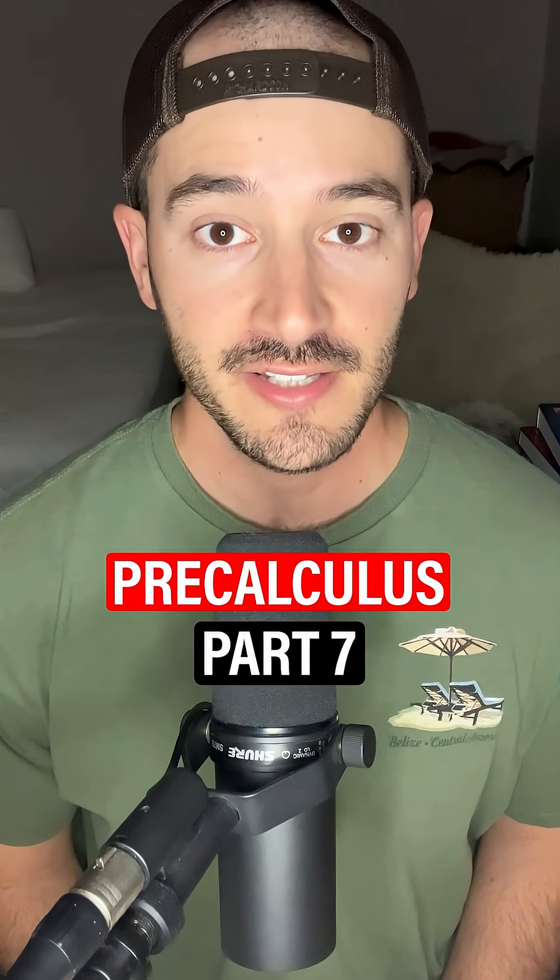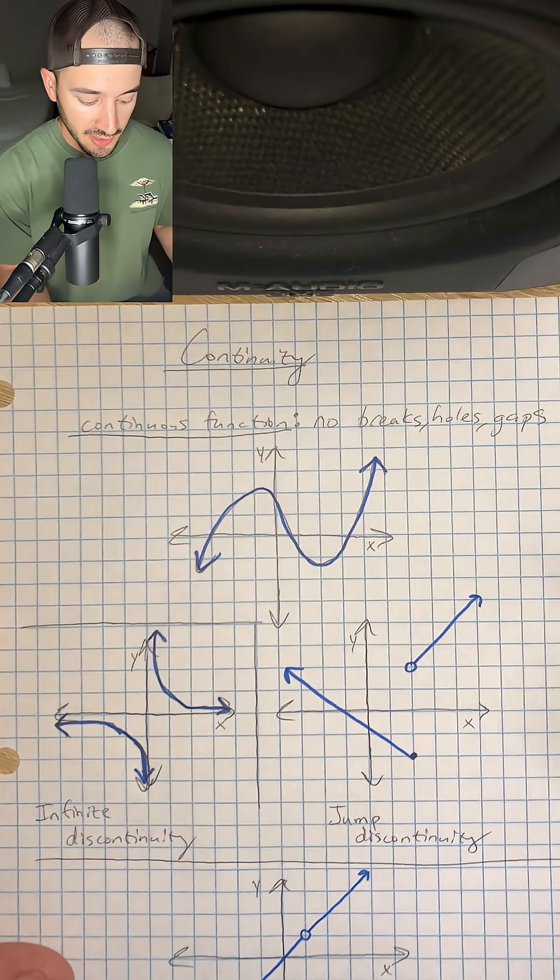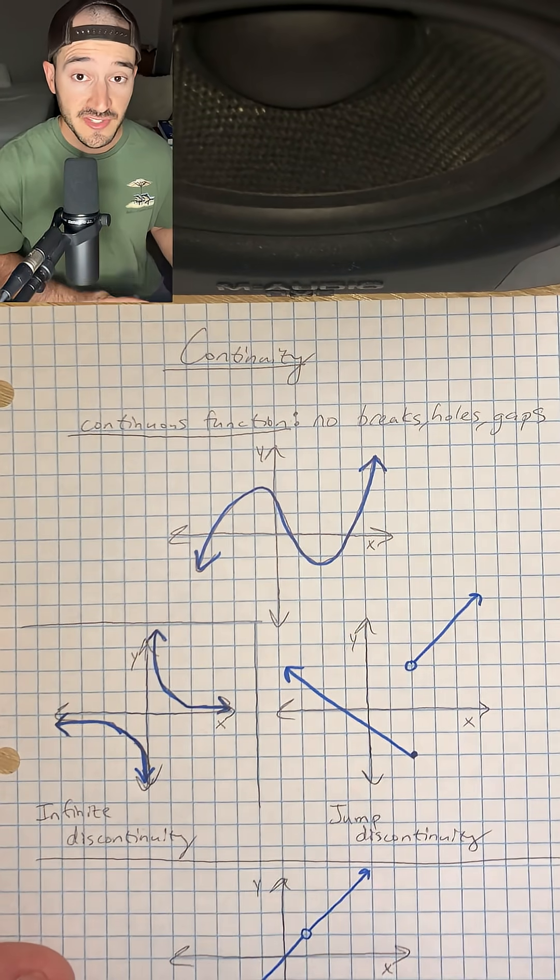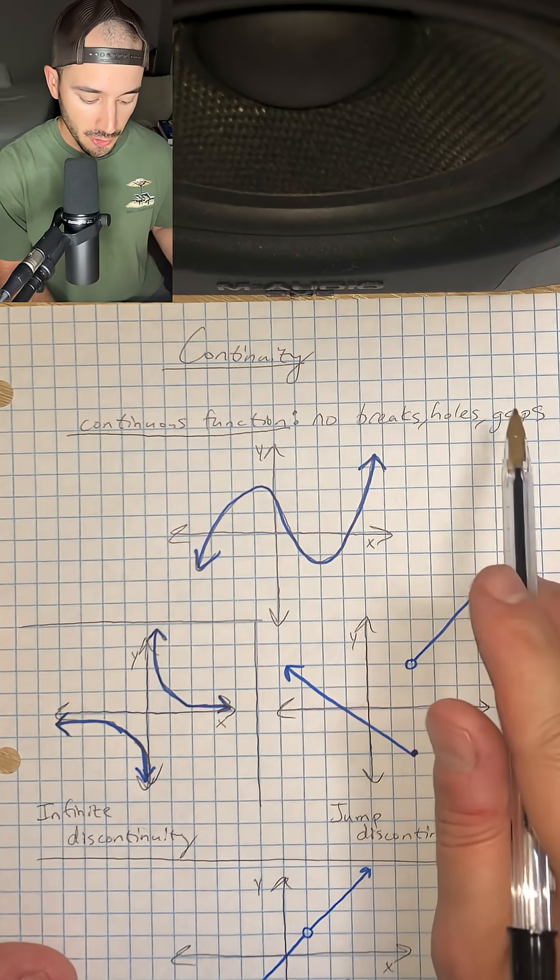This is everything you need to know for pre-calculus part 7. So we're talking about continuity today and a continuous function, just put the most simple way I can, is that it's a graph that has no breaks, holes, or gaps.